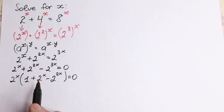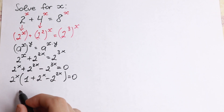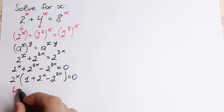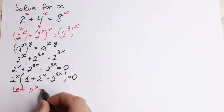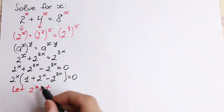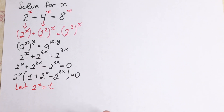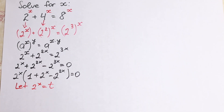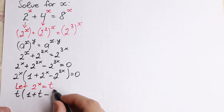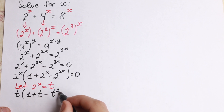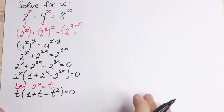Since we have 2 to the x, 2 to the x, and 2 to the 2x appearing, it's a good idea to use a substitution. Let t equal 2 to the x. Then our equation becomes t times the quantity 1 plus t minus t squared, equal to 0.